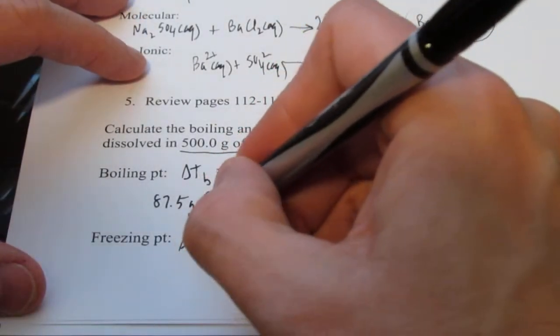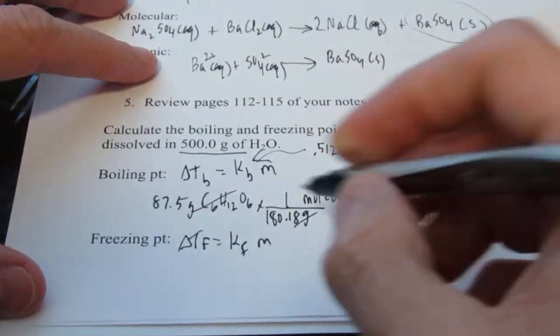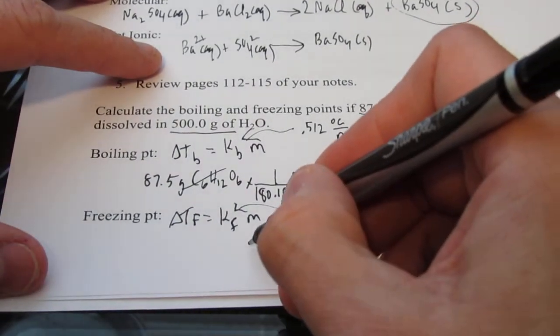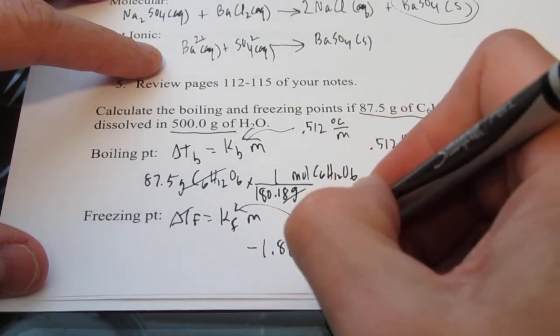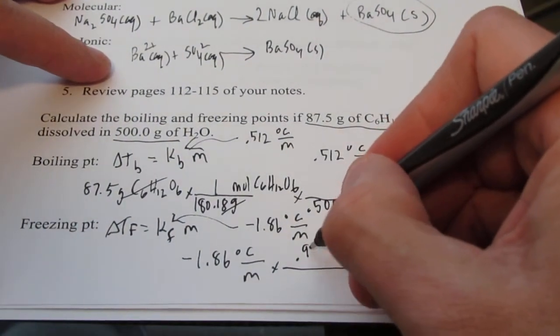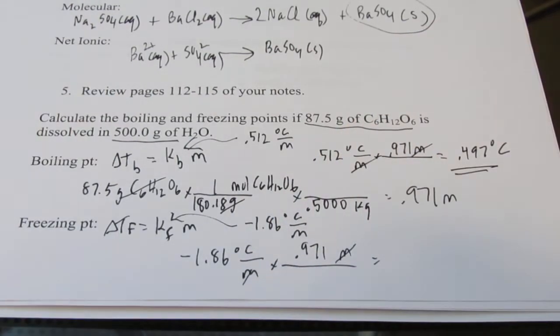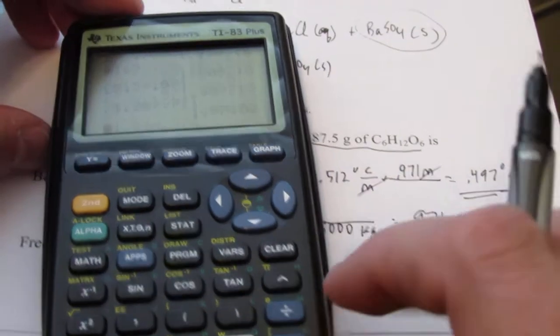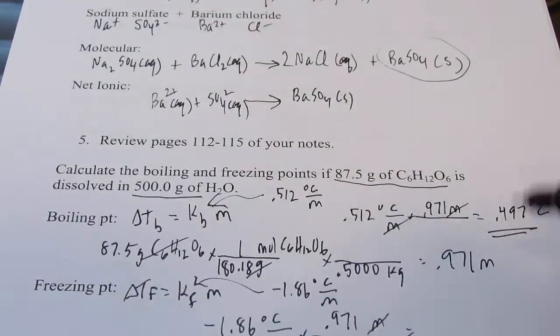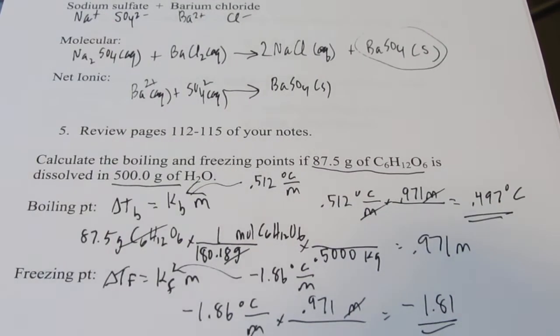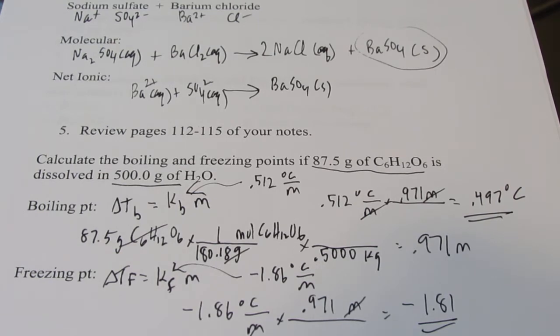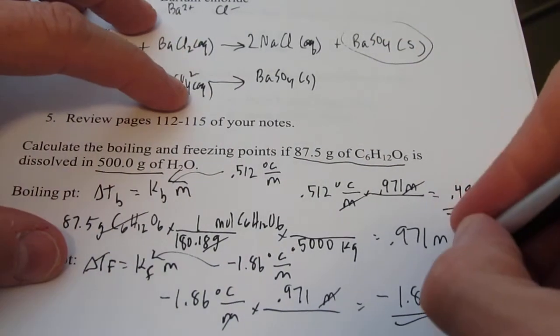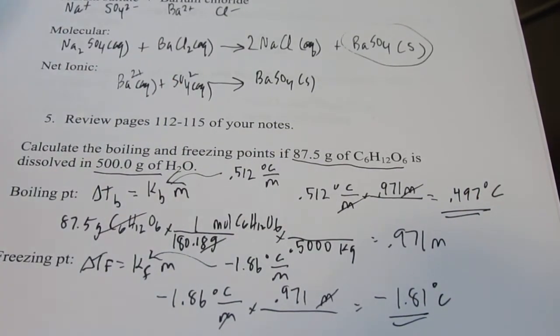Freezing point depression: delta T sub f equals K sub f times the molality. The K sub f for water is negative 1.86 degrees Celsius per molal unit. Negative 1.86 times 0.971 molal gives me negative 1.81 degrees Celsius. My freezing point will drop by 1.81 degrees Celsius. The normal freezing point of water is 0, and if I take 1.81 degrees from that, the new freezing point of water in this solution will be negative 1.81 degrees Celsius.